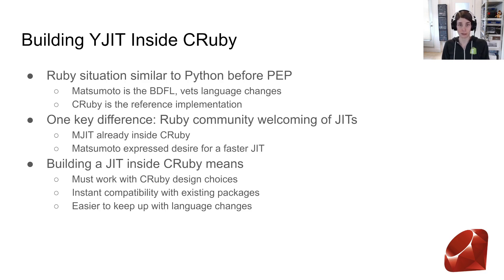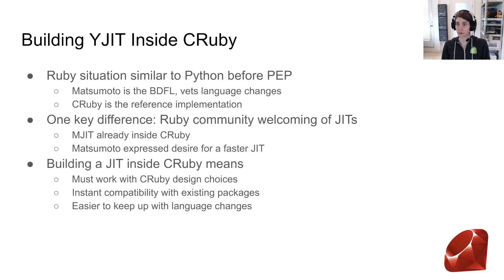Matsumoto has expressed a desire for a faster JIT. By choosing to build a JIT compiler inside of CRuby, we must work with some of the CRuby design choices, but we get instant compatibility with existing Ruby packages and it's a lot easier to keep up to date with language changes. We also believe that the Ruby community is receptive to improvements to the design of CRuby that will make it easier in the future to build high-performance JIT compilers.